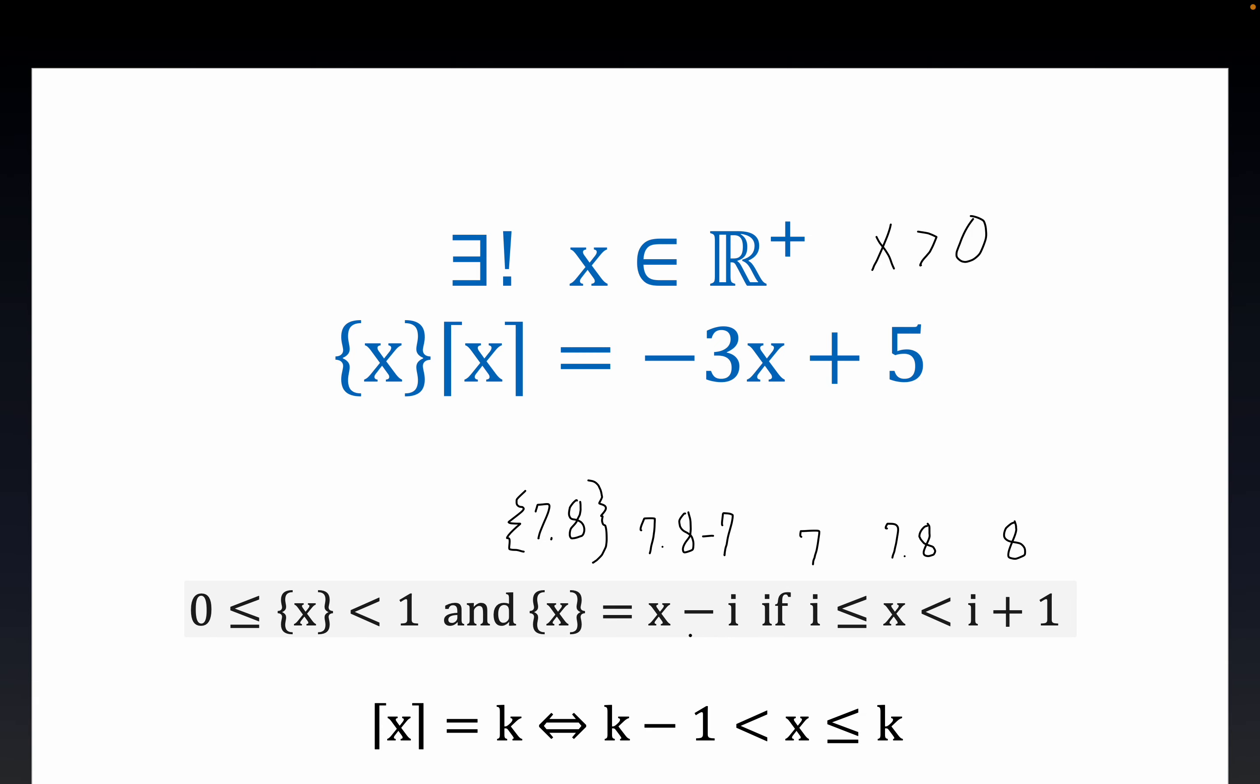And if you actually graph this out, this looks like a sawtooth function. So in other words, we know the fractional part of x is equal to x minus i when x is trapped between i and i plus 1.